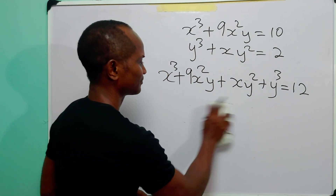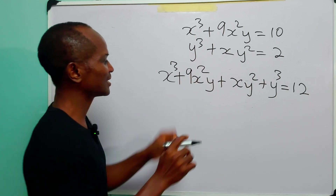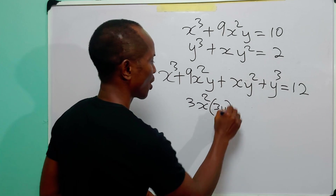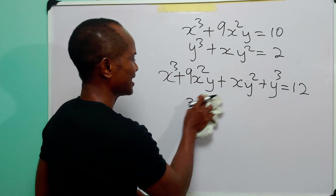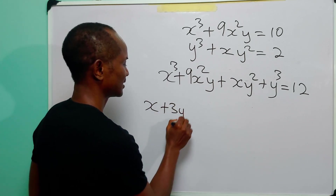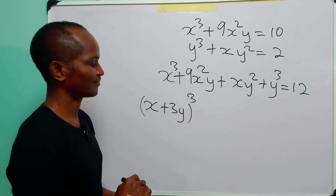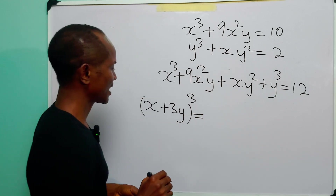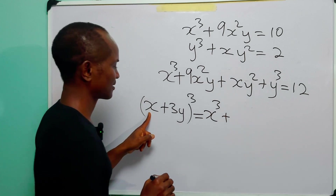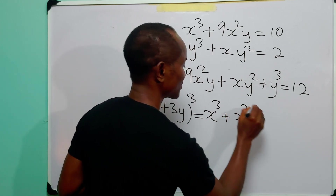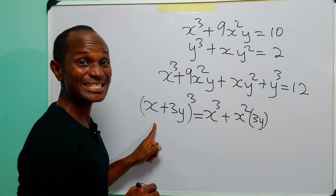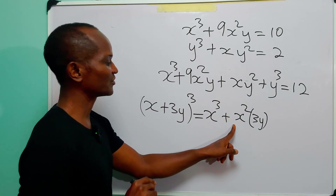Now, this is where you look at the second term and see that it can be written as 3x² · (3y). So let us look at the expansion of (x + 3y)³. We have x³ plus x²·(3y), omitting the coefficients for now — we will add them later.